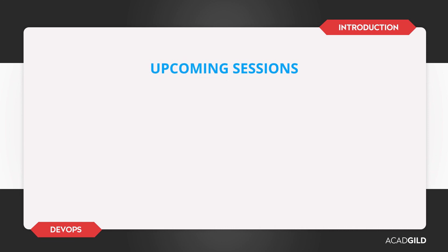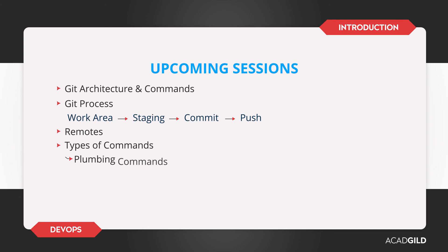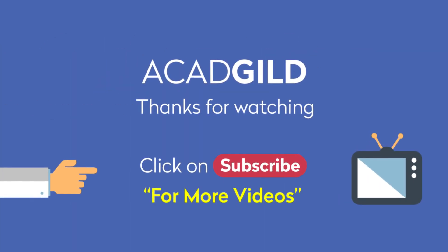In our DevOps course, we are going to learn about Git, Git architecture, and its commands. We are going to learn about the Git process of the work area, staging, commit, and then push. We will also learn about remotes and see how we can run some porcelain commands. In Git, we have two kinds of commands — plumbing commands and porcelain commands. Plumbing commands are high-level commands like commit and push. Porcelain commands are low-level commands where you actually work with Git data garbage collection, packing older commits, and more. We are also going to learn how to integrate Git with Jenkins and how it is used in implementing our DevOps continuous integration and deployment pipeline. Thanks for watching, stay tuned for more DevOps videos.